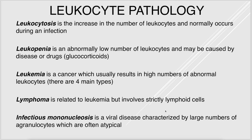Leukocyte pathology: leukocytosis is an increase in the number of white blood cells, which happens oftentimes during infection and can also occur in cancers. Leukopenia is a low number of white blood cells, which can also be caused by infections but also some drugs like prednisone.